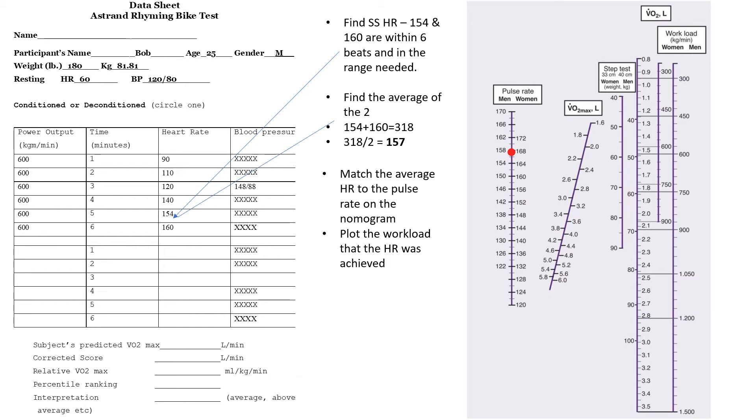And then what we want to do is plot the workload that this heart rate was achieved. So the workload was 600 kilogram meters per minute, so you want to come over here all the way to the right, again, find if it's male or female, and then plot the workload. So 600, be right about there.